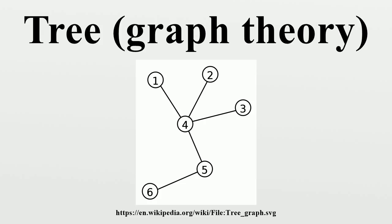Plane tree: An ordered tree or plane tree is a rooted tree for which an ordering is specified for the children of each vertex. This is called a plane tree, because an ordering of the children is equivalent to an embedding of the tree in the plane, with the root at the top and the children of each vertex lower than that vertex. Given an embedding of a rooted tree in the plane, if one fixes a direction of children, say left to right, then an embedding gives an ordering of the children.